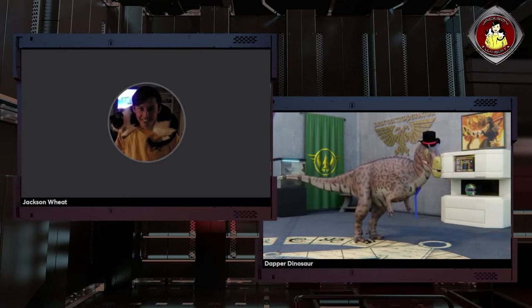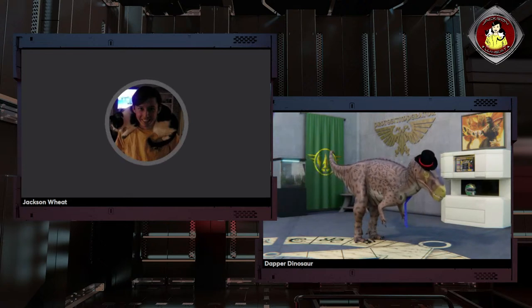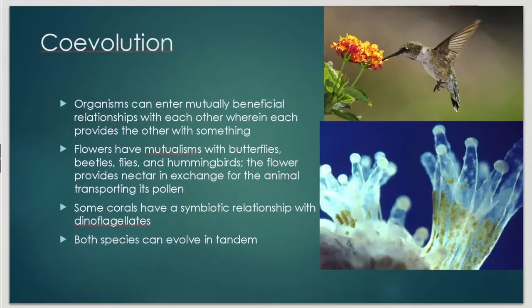Without further ado, we'll get back to where we left off, which was with co-evolution. So we're still talking in a sense about evolutionary arms races, but instead of organisms being antagonistic against each other — as we mentioned last time, the gazelle and the cheetah — or the cuckoos and the various birds they parasitize, these are beneficial relationships.